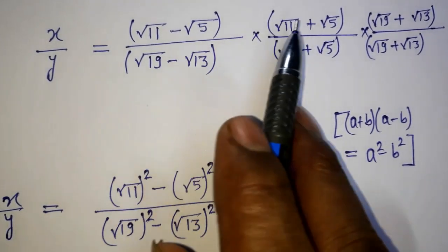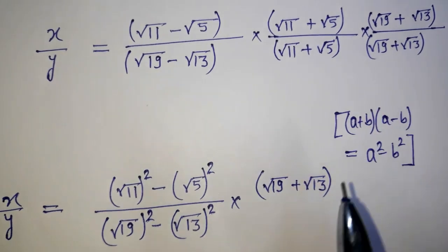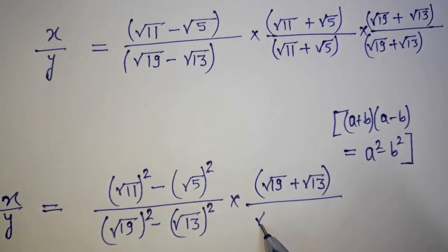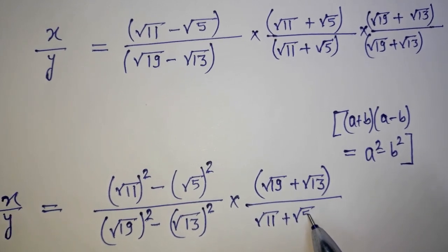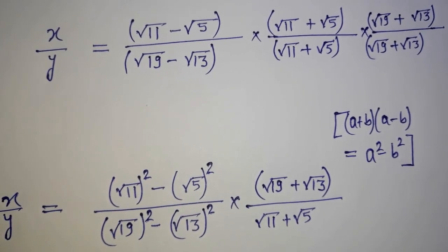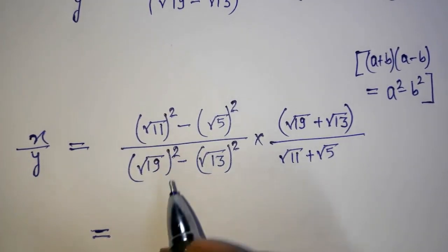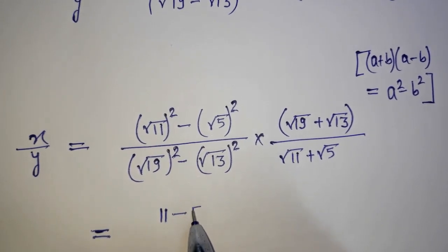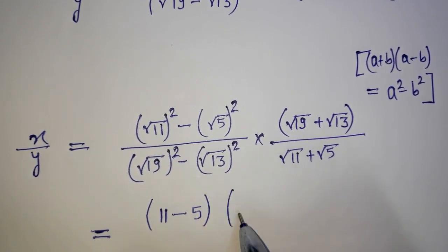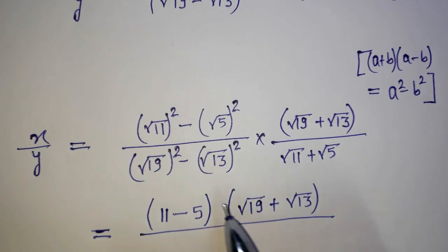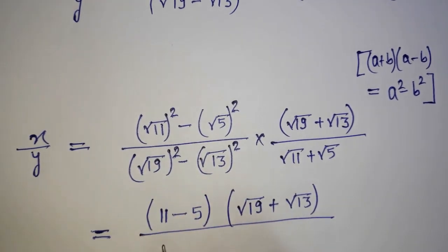This is going to multiply with this, and this is going to multiply with this. The remaining term is root 11 plus root 5. You can see it is 11 minus 5, and here it is 19 minus 13.